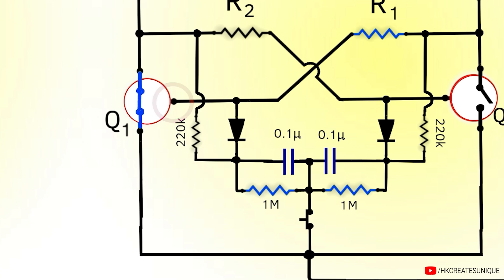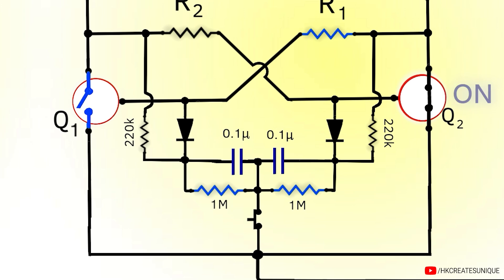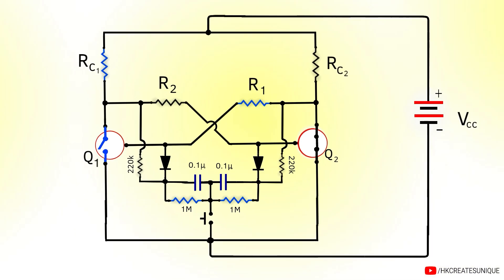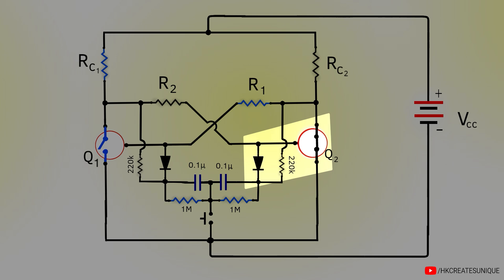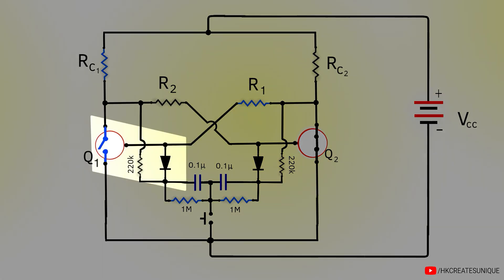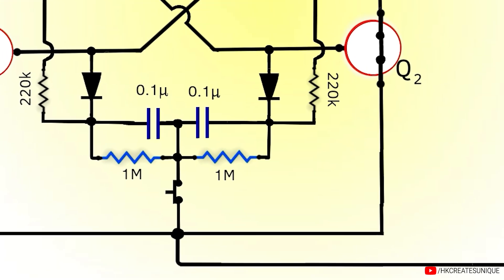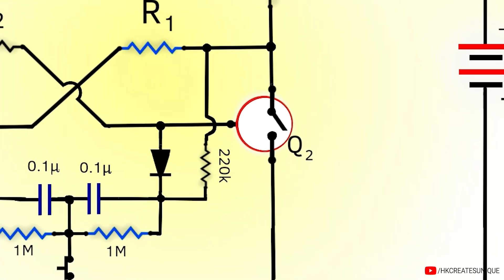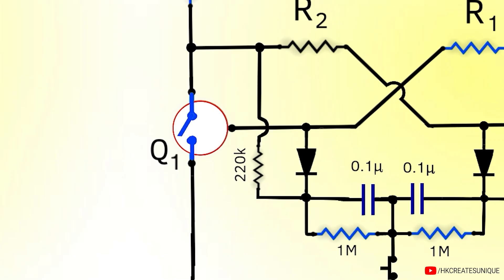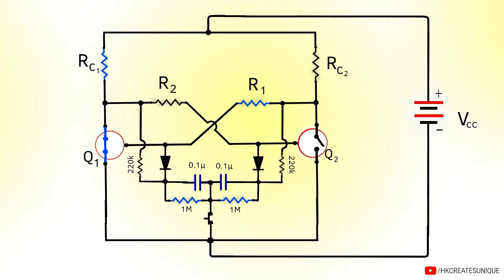After the state changes, the second diode gets forward biased and the first one gets reverse biased. If the button is pressed again, Q2 turns off and Q1 turns on. This way, the circuit alternates between states with a single button press.